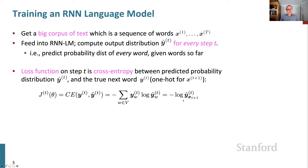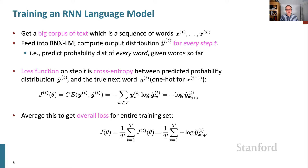We have a probability distribution over predictions of what word comes next, and there was an actual next word in the text. We ask: what probability did you give to that word? Maybe we gave it a probability estimate of 0.01. It would have been great if we'd given a probability estimate of almost one, meaning we were almost certain what came next. We take a loss to the extent that we're giving the actual next word a predicted probability of less than one. To get an idea of how well we're doing over the entire corpus, we work out that loss at each position and average it over the entire training set.